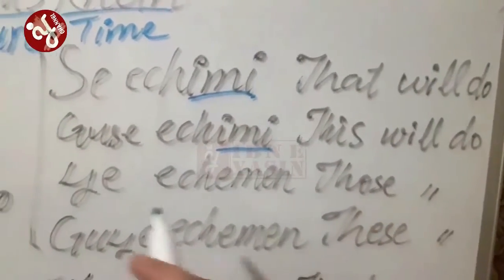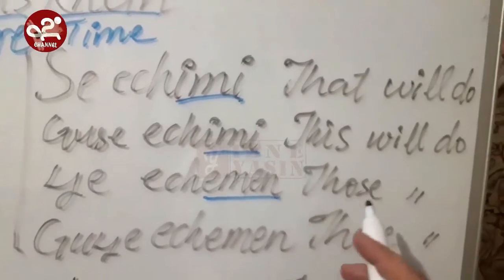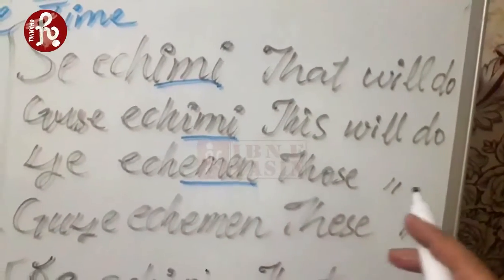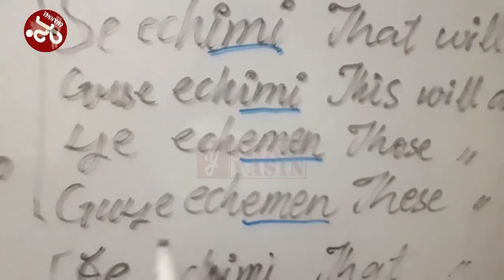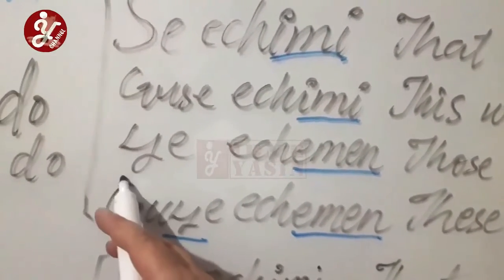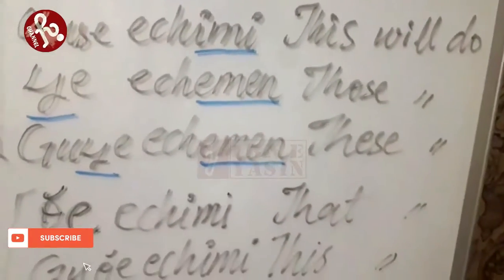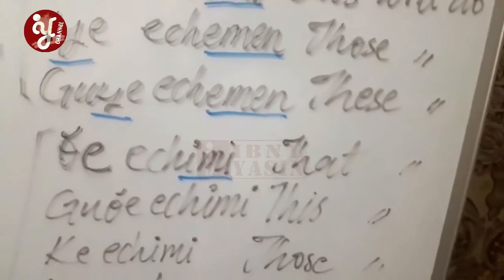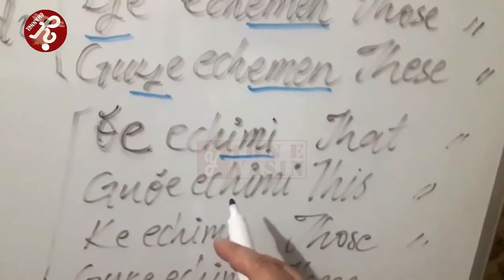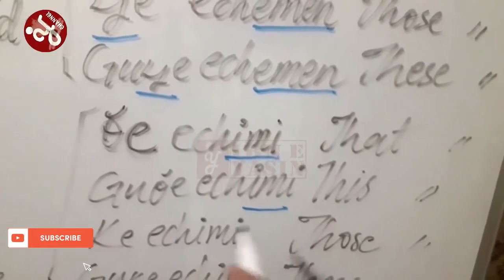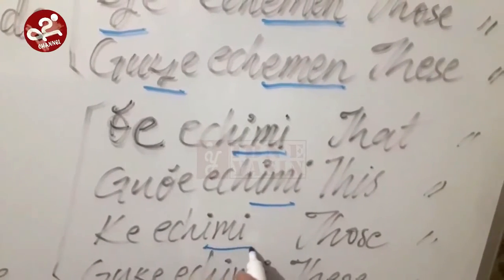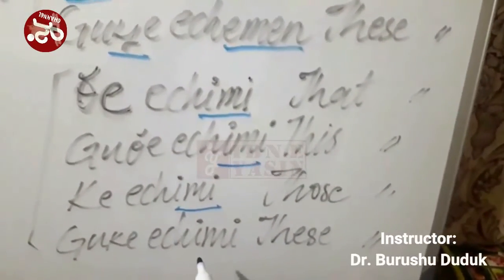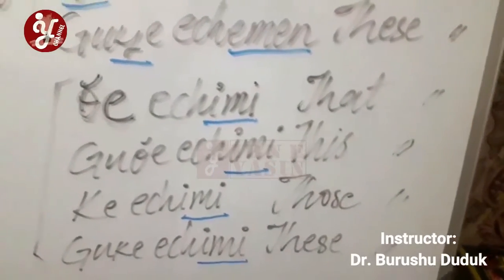'Say HMN' is plural — more than one animal or object 'will do.' 'Guse HME' means a fluid, foldable, flat, or soft object 'will do.' 'Gute HME' — this near object 'will do.' 'Ke HME' — that far object 'will do.' 'Guke HME' — plural, more than one 'will do.' These singular 'will do.'